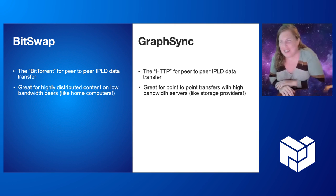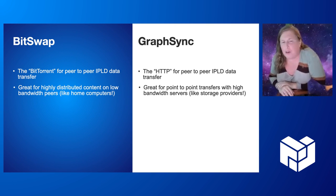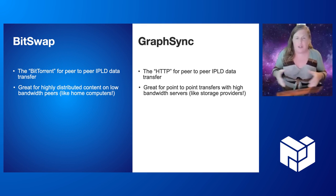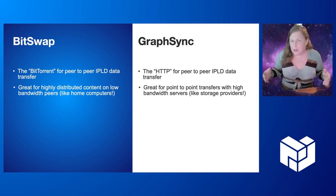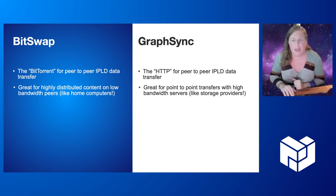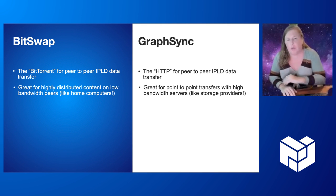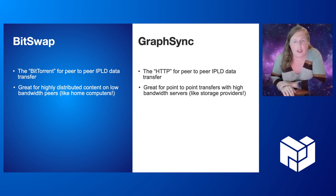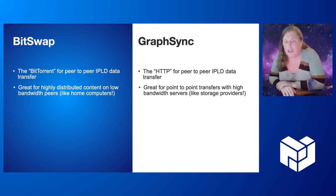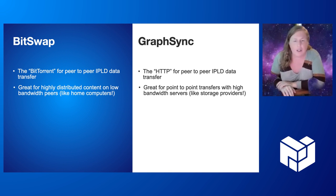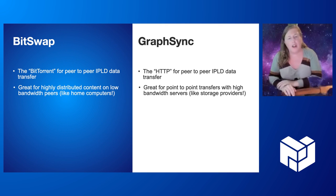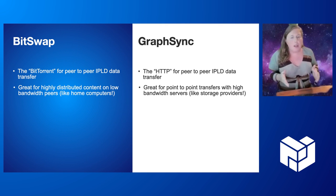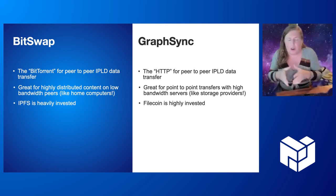That means they shine best in different scenarios. BitSwap, like BitTorrent, is good for moving highly distributed content from many peers where each individual peer might have low bandwidth, like a home computer. GraphSync, like HTTP, functions great for downloading data from high-bandwidth servers like storage providers. The other big difference between the protocols is a historical artifact of how they were built.